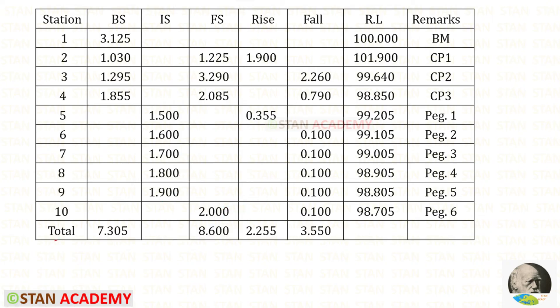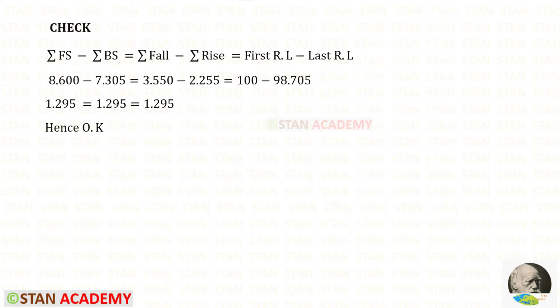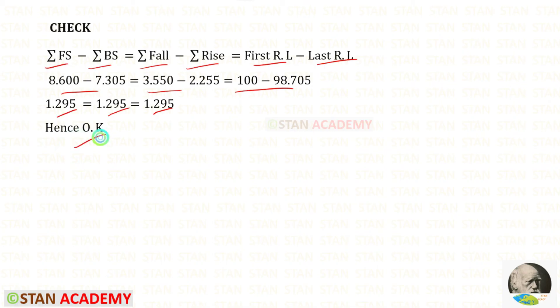Then we can find the totals. We add all the backsights, then all the foresights, then all the rises, and then all the falls. Now we apply the check: summation of foresights minus summation of backsights equals summation of falls minus summation of rises, which equals the difference between the first and last reduced level. For all of them we get the same value — hence OK.